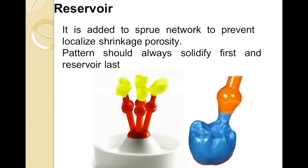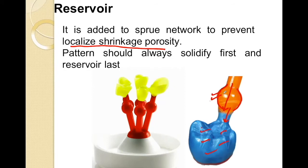To the sprue former, we attach the reservoir. This reservoir acts as a pool of molten metal and thus prevents the localized shrinkage porosity. When we inflow the metal inside the pattern, the molten metal in the casting should solidify first and the reservoir should solidify last. This is because the reservoir acts as a pool from which the molten metal can continue to flow into the wax pattern.